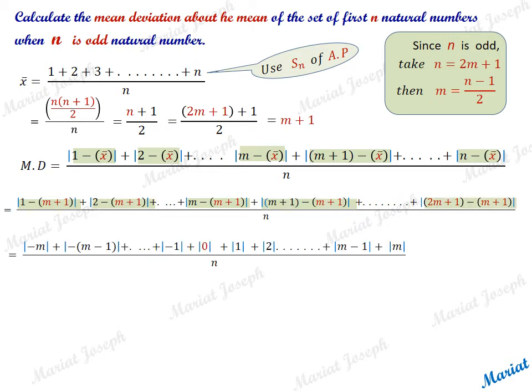The first bracket simplifies to minus m. The subsequent moduli simplify to |-(m-1)|, ..., |-1|, |0|, |1|, and so on up to |m|. These values represent m, m-1, ..., 1, 0, 1, ..., m, which can again be summed using the arithmetic progression formula.